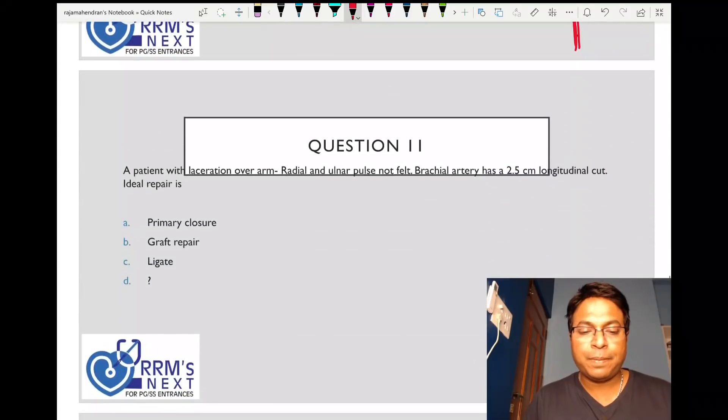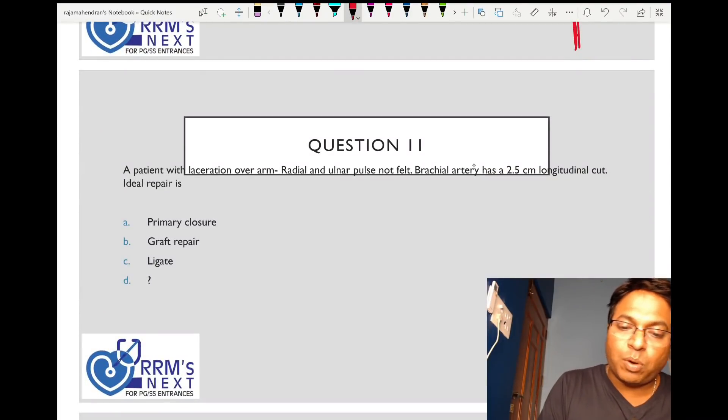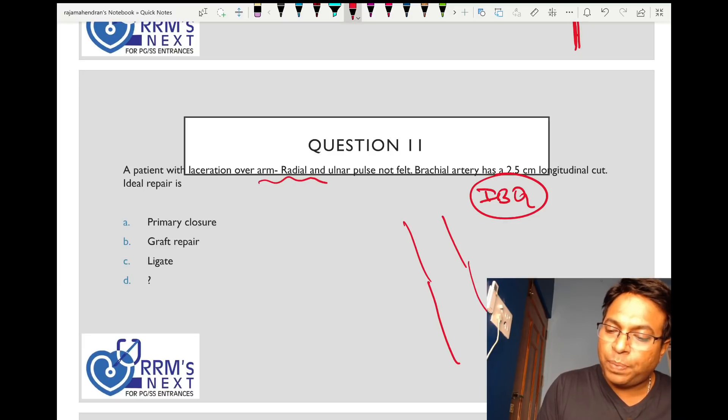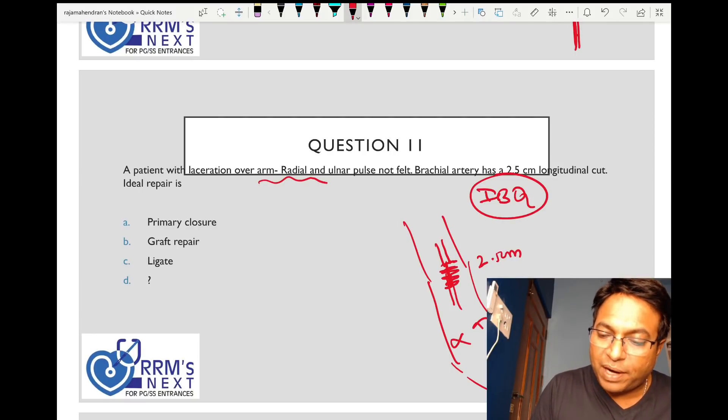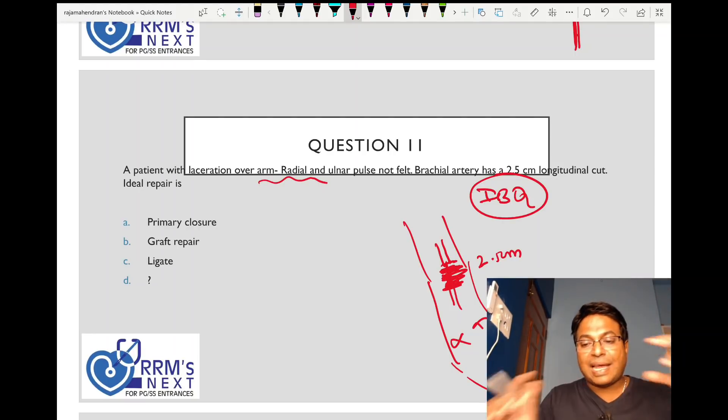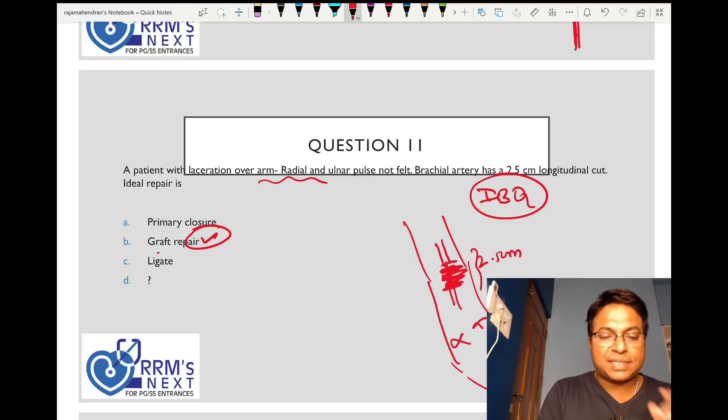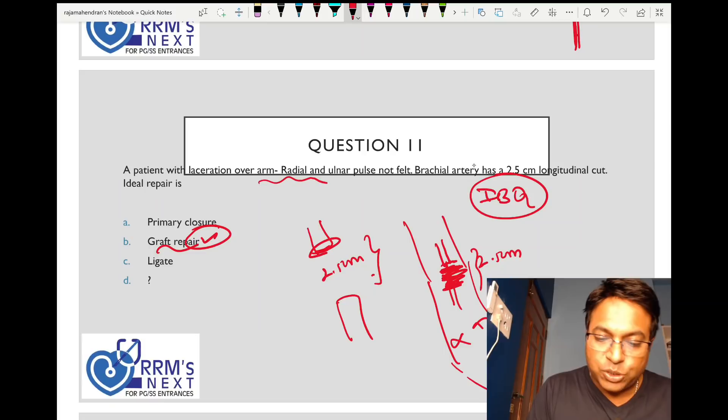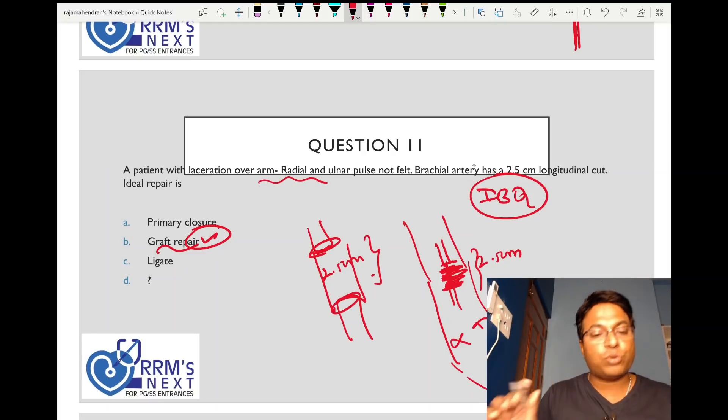Patient with laceration over arm. This is an image-based question showing no pulse in ulnar and radial artery. Brachial artery has 2.5 centimeter injury with a longitudinal gap. We cannot approximate this gap, so we have to use graft. Long gap in brachial artery with no flow seen distally requires immediate graft placement.